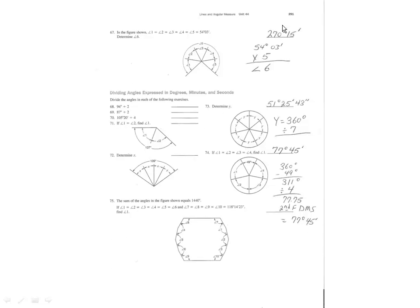I'm not saying these are the only two that's going to be on the test, but they'll all be similar. For the next page, we're on page 291. They want to figure out what angle six is. Angle one equals angle two equals angle three equals angle four equals angle five, so we just take 54 degrees, 3 minutes, and multiply it by five. That means angle six equals 270 degrees, 15 minutes.